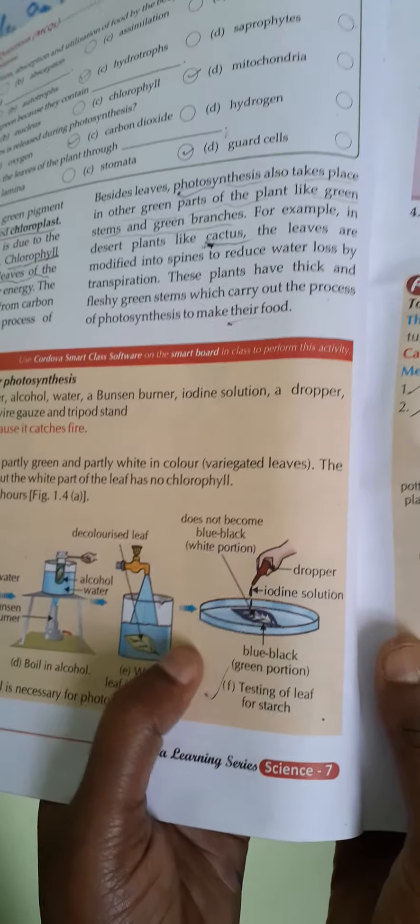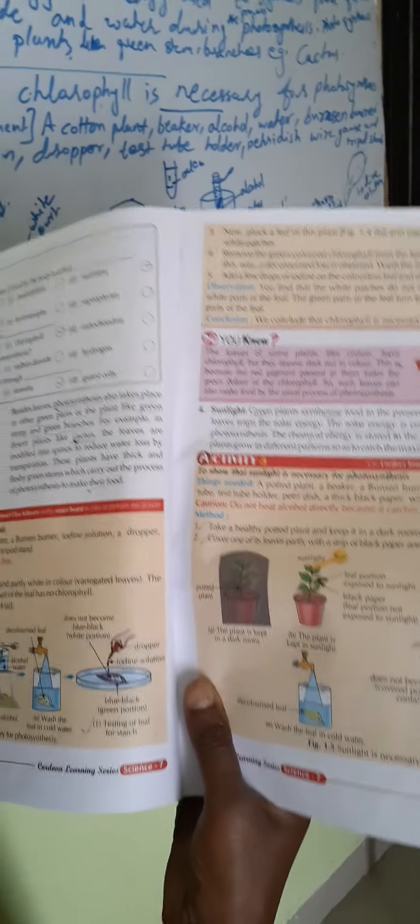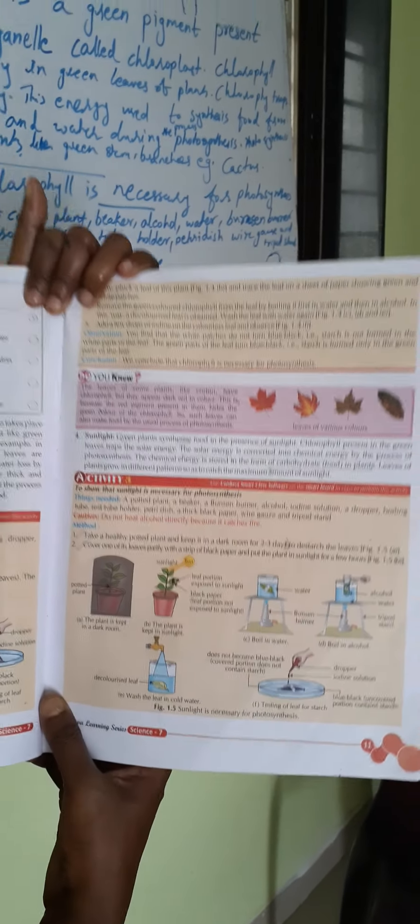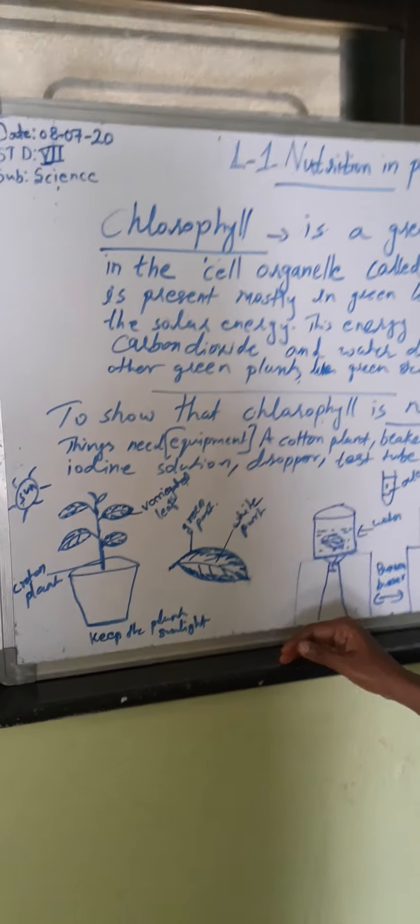Look at your notes. Take a croton plant — its leaves are variegated. Keep the plant in sunlight for a few hours. Pluck the leaf, keep it in boiling water, then indirectly boil it in alcohol. Wash in cold water, place in a petri dish, and add iodine solution. The green portion turns blue-black color. We conclude that chlorophyll is necessary for photosynthesis.